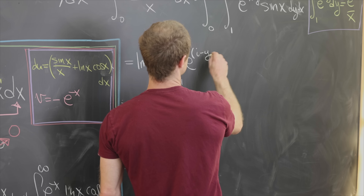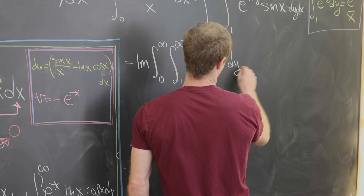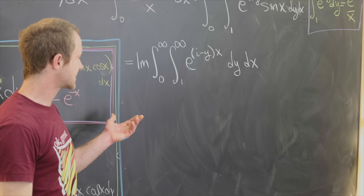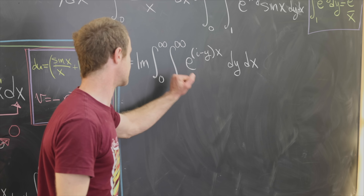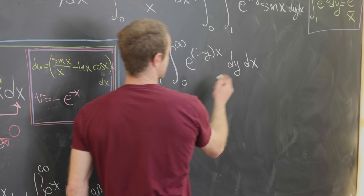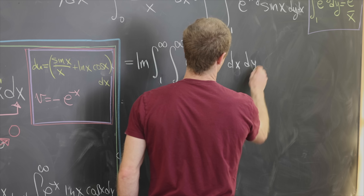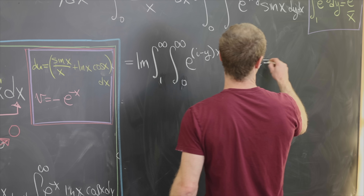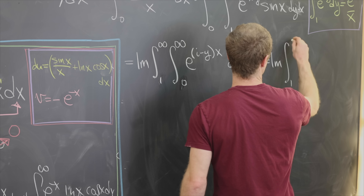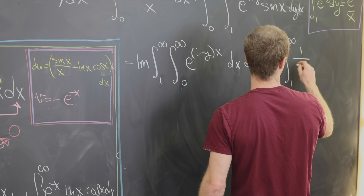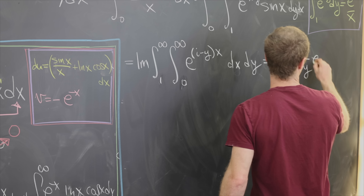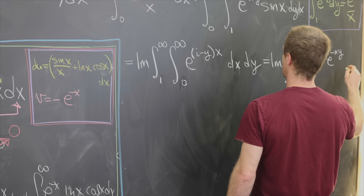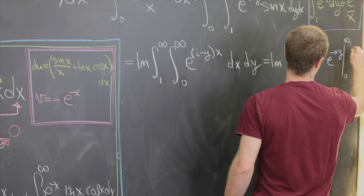Now we'll express the sine function using complex exponentials via Euler's formula: e to the ix equals cosine x plus i sine x, which means sine of x is the imaginary part of e to the ix. So we can write the whole thing as the imaginary part of the double integral from zero to infinity and one to infinity of e to the i minus y times x dy dx.